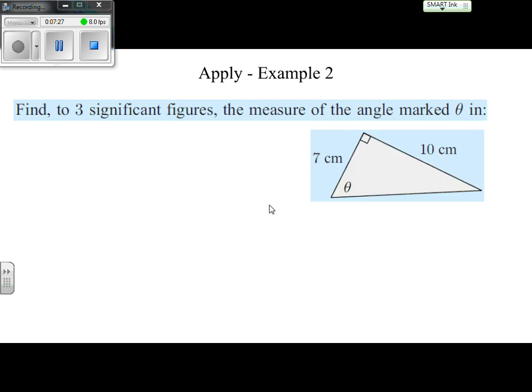Once again, finding to three significant figures the measure of the angle marked theta in the following diagram. Theta is a variable representing an unknown angle. We do know one of the angles is 90 degrees, which allows us to use our trig functions. We have two sides of a triangle and we're trying to find this unknown angle. I'm going to write down SOHCAHTOA and identify the two sides that we have in relation to this angle.